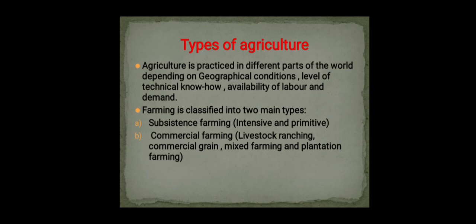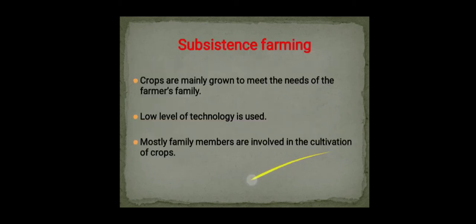The types of agriculture include subsistence farming and commercial farming. Subsistence farming is farming wherein crops are mainly grown to meet the needs of the farmer's family. Low-level technology is used and mainly family members are involved. Crops are grown and livestock raised mainly for their own use without any surplus for trade.